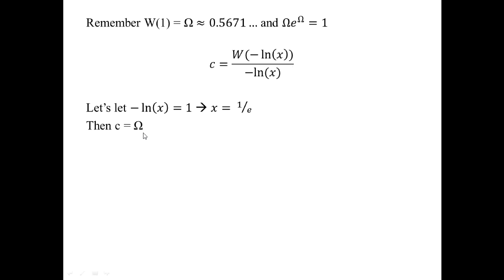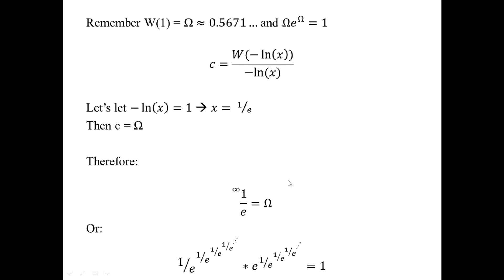This means C = ω, so the infinite tetration of 1/e converges to the omega constant — a pretty nice property that relates e, infinite tetration, and omega to one another. As a fun consequence, this infinite power tower of 1/e, times e raised to that same infinite power tower, must equal 1, because ω · e^ω = 1.